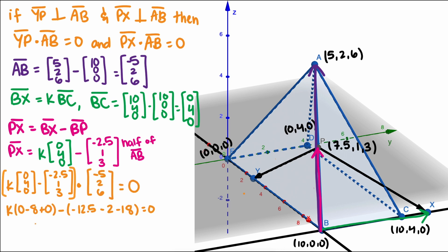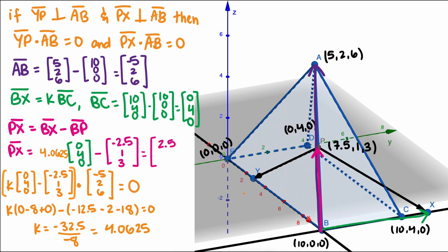Simplifying everything, we get K equals 4.0625, which means PX equals 2.5, 15.25, negative 3.